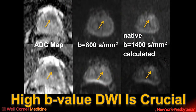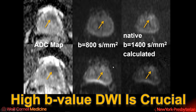The high B-value DWI is crucial for assessment. You can see that there's low signal in the anterior left portion of the prostate on the ADC map, and that this area looks iso-intense on the intermediate B800 DWI image. But the natively acquired B1400 and a calculated B1400 image, which is generated from lower B values, shows that there is focal hyperintensity.